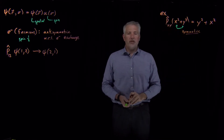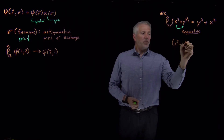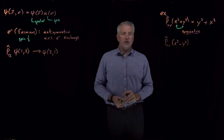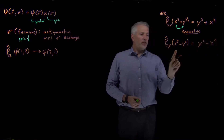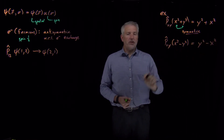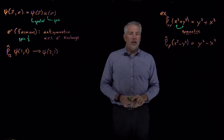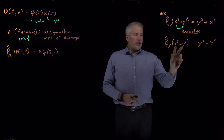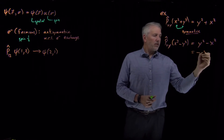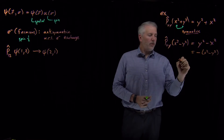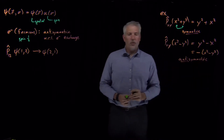The function x² + y² is symmetric with respect to exchange of x and y. On the other hand, if I have the function x² − y² and I exchange those two variables — x becomes y and y becomes x — x² becomes y², the minus sign stays, and y² becomes x². The result is y² − x², which is the negative of the original function. So that function is antisymmetric with respect to exchange.